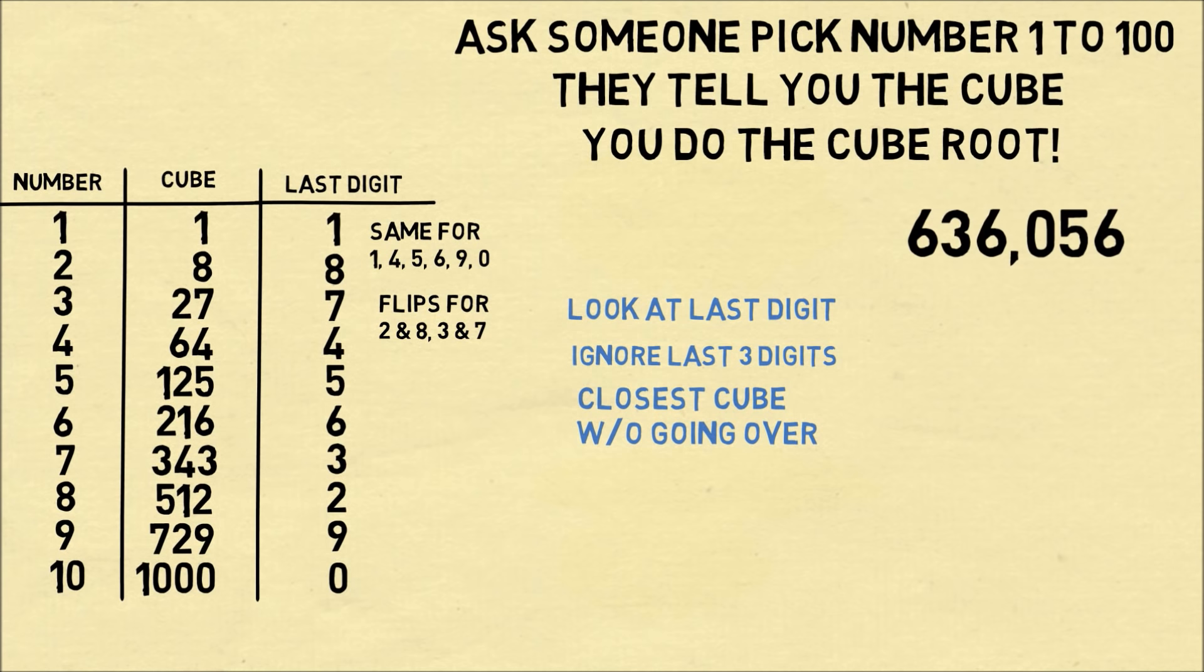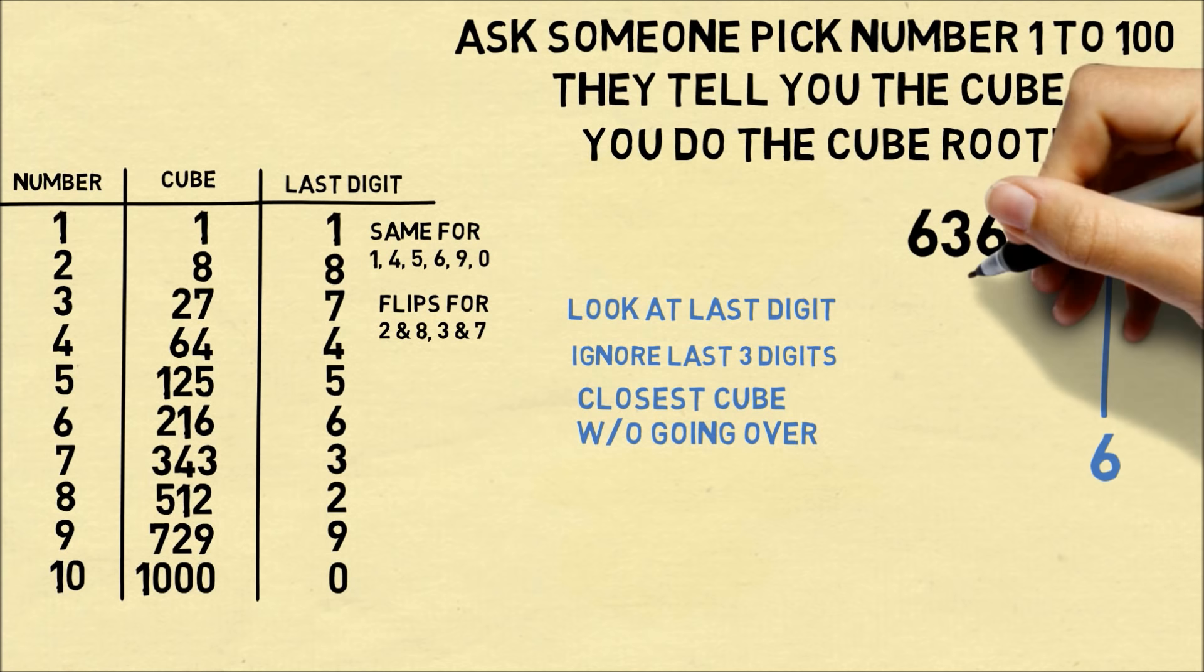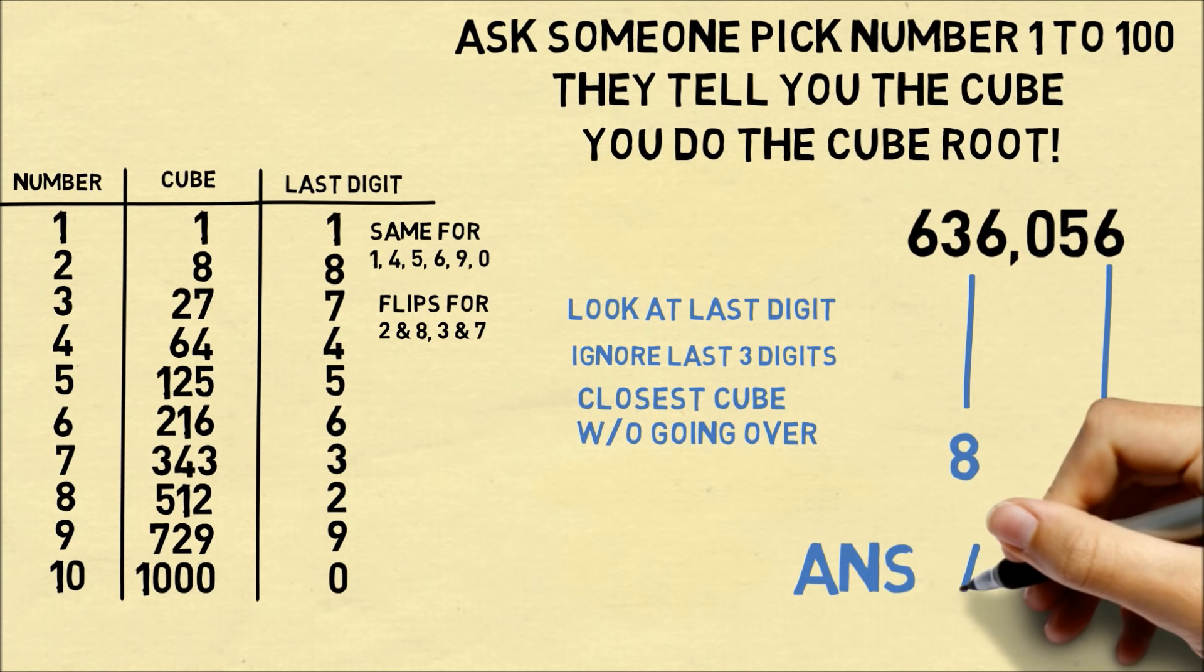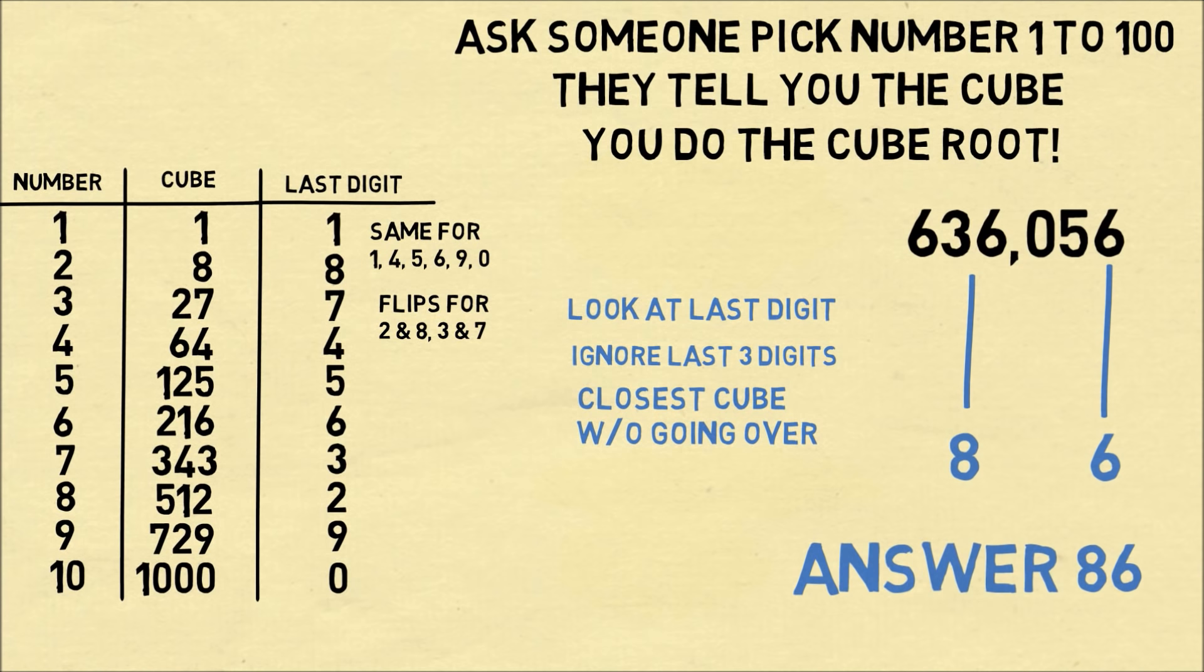Let's imagine they tell you the number is 636,056. We look at the last digit, which is 6, and when the last digit is 6, that corresponds to the number 6. Then we ignore the last three digits, and we look at 636. That's between the cubes of 8 and 9, so we put 8, and therefore the cube root is 86.